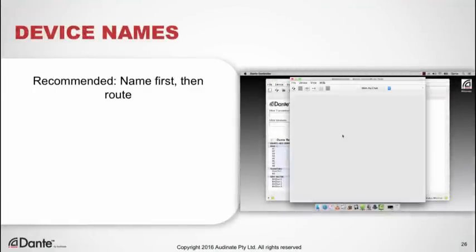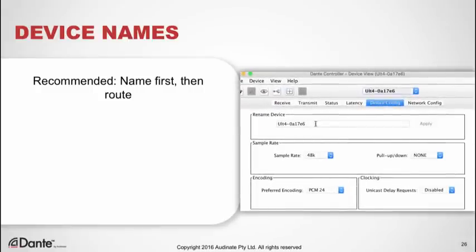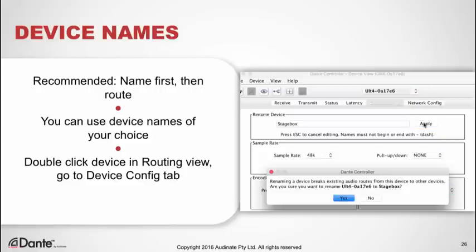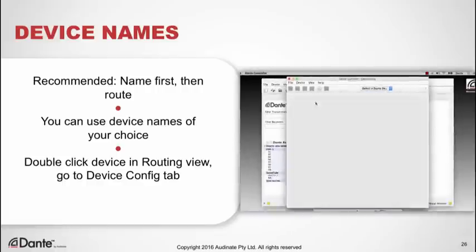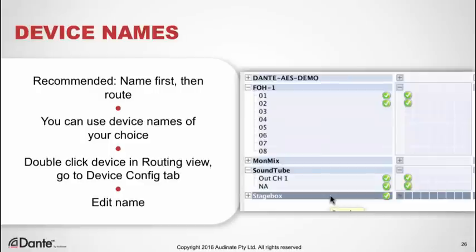Devices and associated channels can be given names of your choosing. It's highly recommended that you name your devices before you do your routing in order to keep things clear. To change a device name, simply click the device name in the routing view, or double-click it in the device view. Click on the device config tab, edit the name as you choose, click Apply, and it's done. The name is immediately reflected on the device in the routing view.